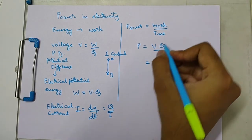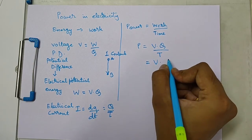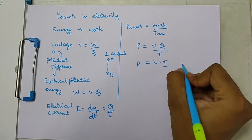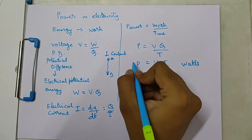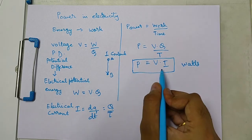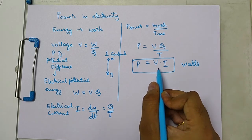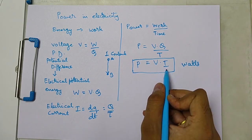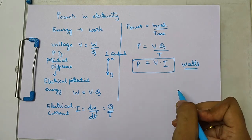So we can write this q/t as current I. We have derived the equation for power in terms of electrical parameters voltage and current. Power is equal to voltage multiplied by current, and the unit is watts.